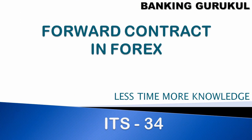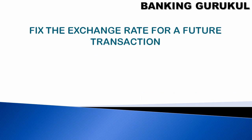Hi friends, today we'll discuss about forward contract in forex. So what is a forward contract in forex? It fixes the exchange rate for a future transaction — you know the exchange rate in advance. For example, one dollar equals 74 rupees. This is the exchange rate. If you want a dollar, you have to pay 74 rupees. To fix an exchange rate for a future date — after one month or after one year — you want a dollar or a pound, so you fix the exchange rate today itself.